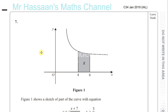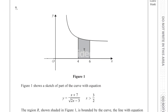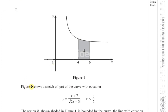Question C34, January 2019 Question 7, Part A. We have a diagram — a figure which shows a sketch of part of the curve with equation y equals x plus 7 over the square root of 2x minus 3.